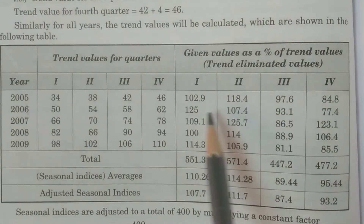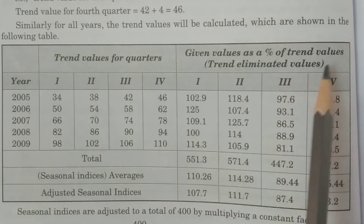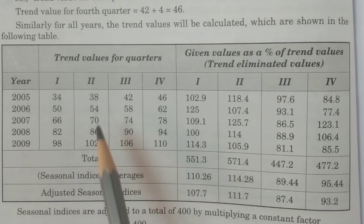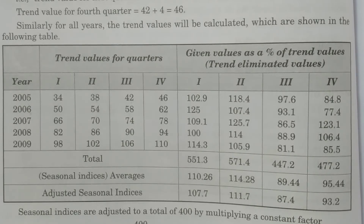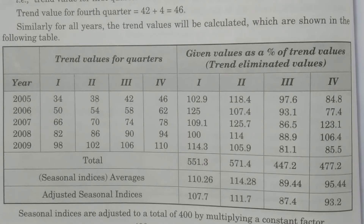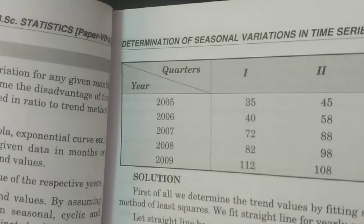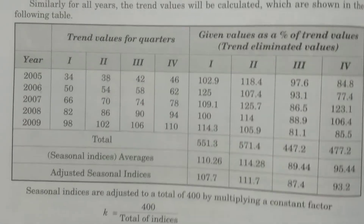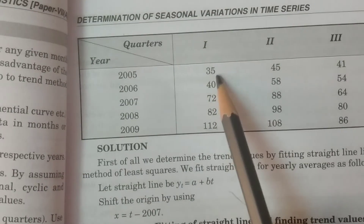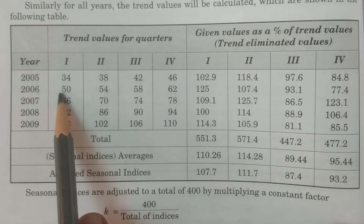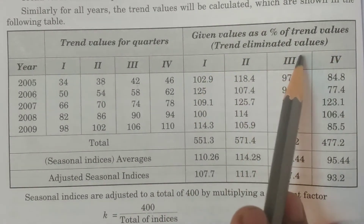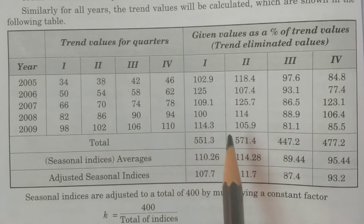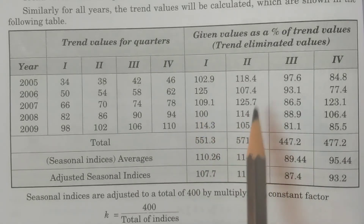Now express the given values as a percentage of trend values. For example, the first quarter of 2005 has a given value of 35, and the calculated trend value is 34. So 35 divided by 34 times 100 gives 102.9. That is called given values as a percentage of trend values, also called trend-eliminated values — we are eliminating the trend.